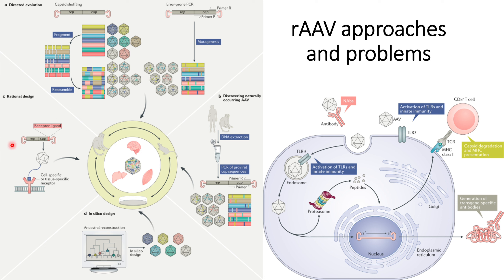The second one is the rationally designed approach. In this, what they do is they add some kind of ligand or receptor that is available on the cells of the host so that it increases the probability of transduction of this recombinant AAV within the cells of the host.